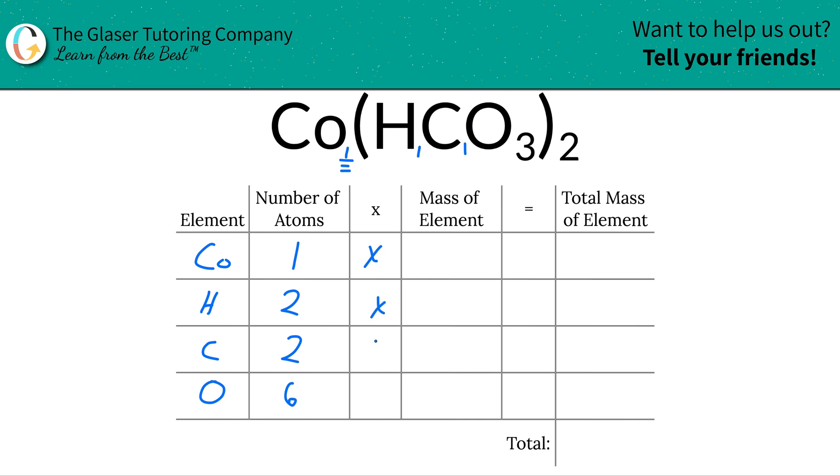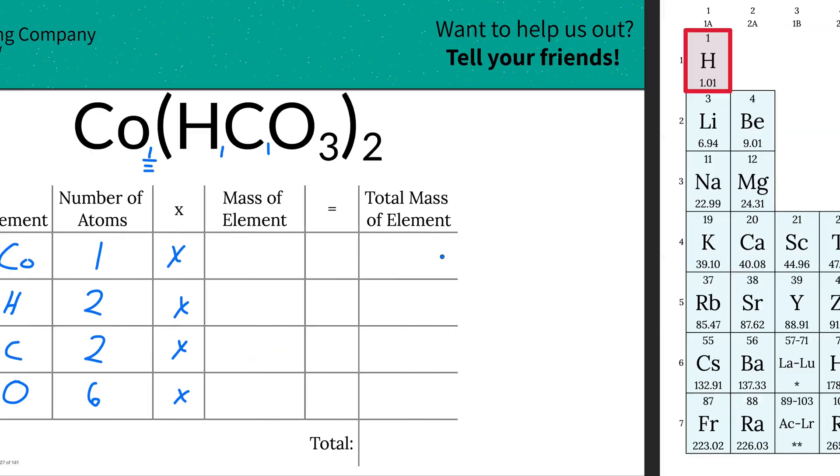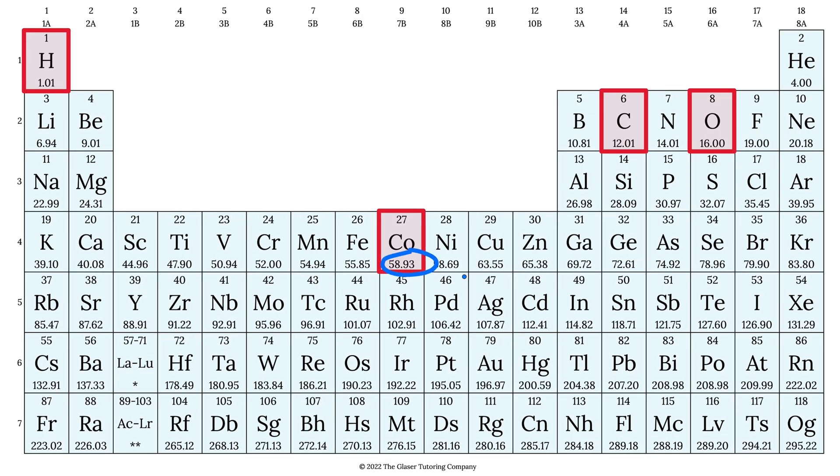Then we're going to take those number of atoms and multiply by the mass of each element. These masses are found on the periodic table, so let's take a look. Cobalt is 58.93, hydrogen is 1.01, carbon is 12.01, and oxygen is 16.